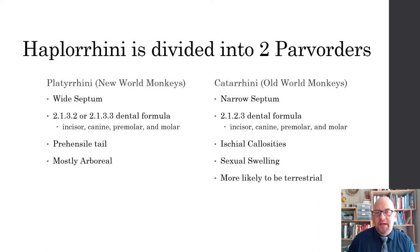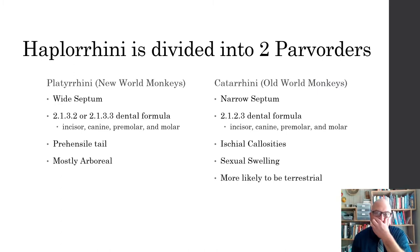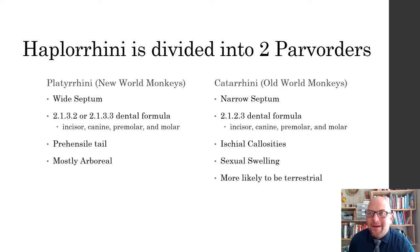Another thing common in Platyrrhini that you don't see in Catarrhini is prehensile tails. A prehensile tail is almost like a third hand — it allows new world monkeys climbing around trees an extra way to hold on and grasp things. Many can even fully hang from it. This will also ruin tons of movies for you, because it's a lot cheaper to film a jungle scene in Mexico or Central America than in Africa, so you'll see new world prehensile-tailed monkeys in movies supposedly set in Africa or Southeast Asia.